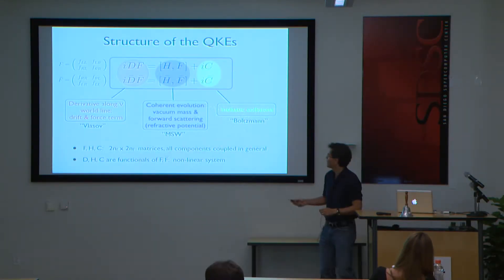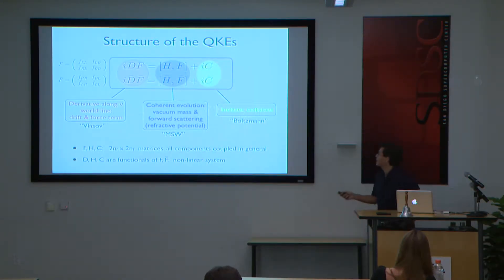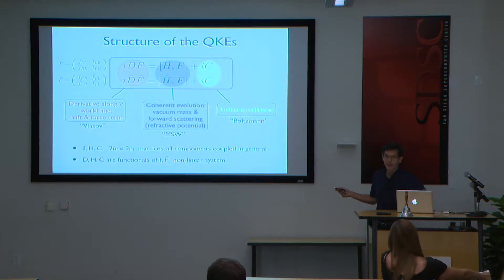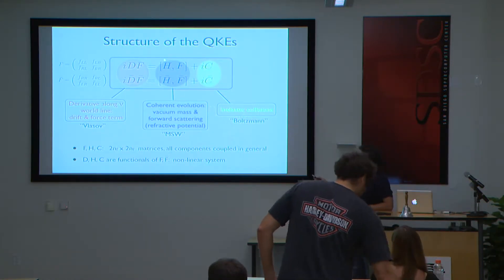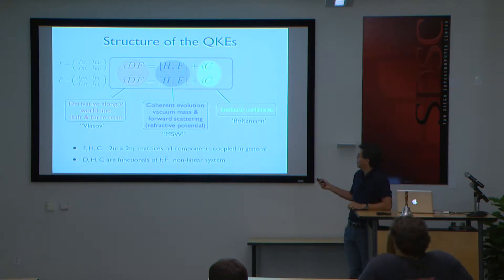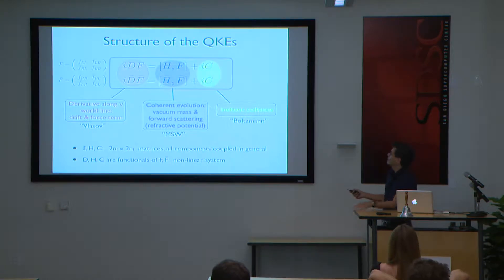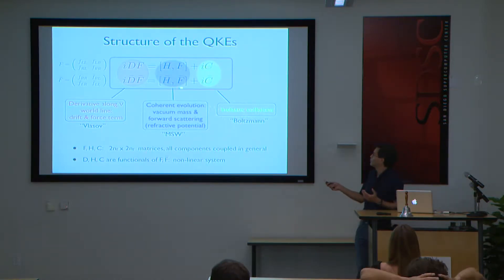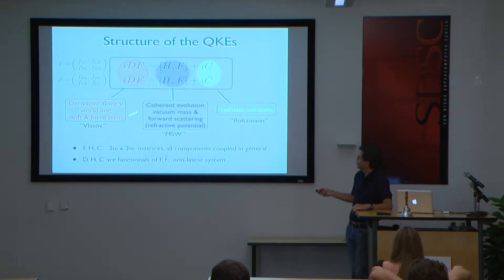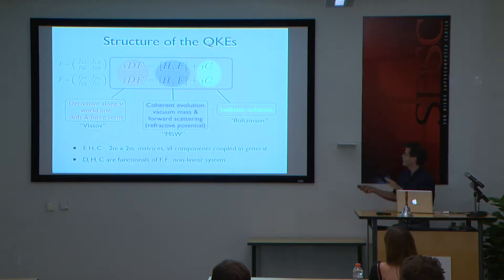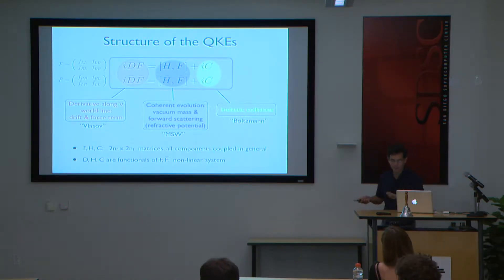Here's where we stopped yesterday. Let me show you again the structure of these QKEs. There's a derivative along the neutrino world line, then there's a commutator term with a Hamiltonian-like operator that describes the coherent evolution, and then a Boltzmann-type collision term. Today we'll go into a little bit of detail about each of these operators. Each of these symbols represents a 2NF by 2NF matrix, and we'll look at the physics that goes into these and what they do on the neutrino physical state.